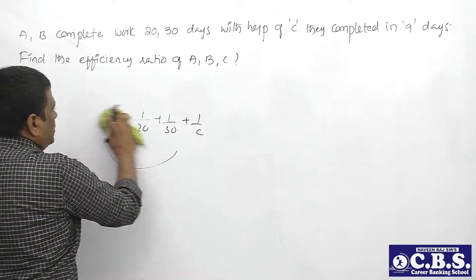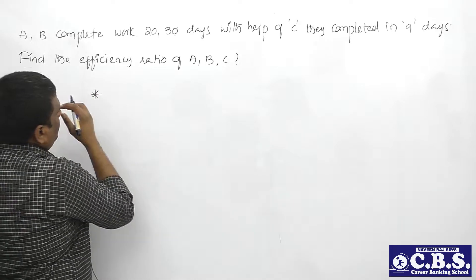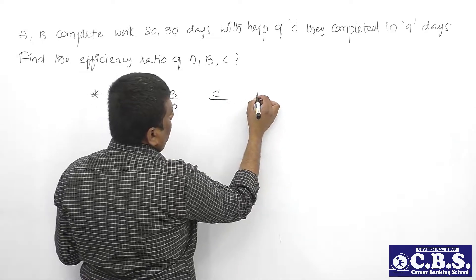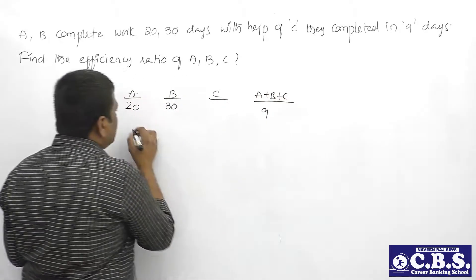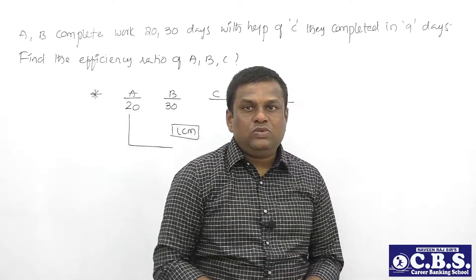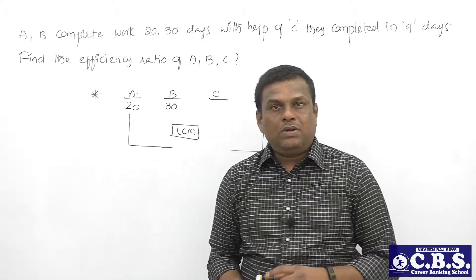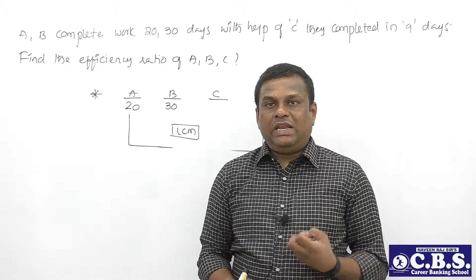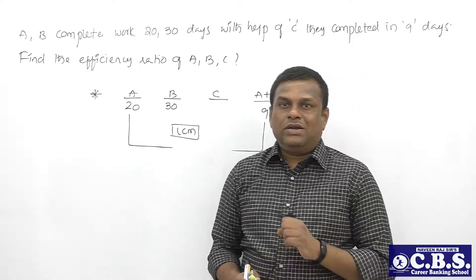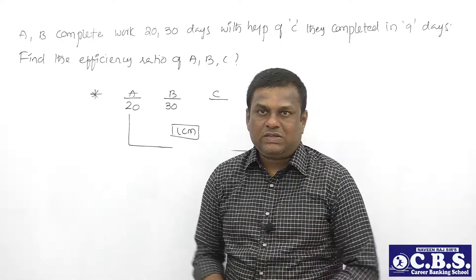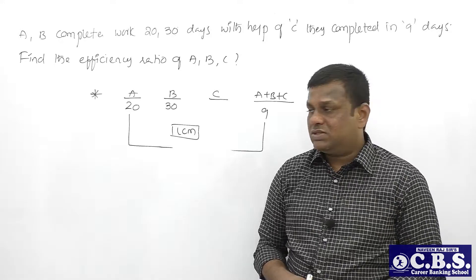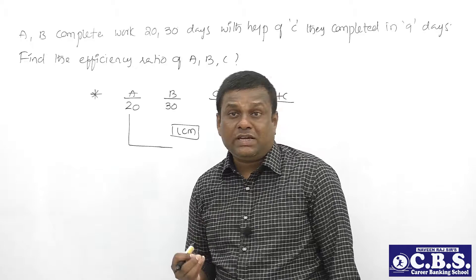So let's use the LCM concept instead. A takes 20 days, B takes 30 days, and A+B+C together complete the work in 9 days. We apply LCM because time is an increasing function. LCM stands for Least Common Multiple - 'multiple' indicates increasing. Just like age is an increasing function, days, hours, minutes, and seconds are all increasing - so we use LCM. The LCM of 20, 30, and 9 is 180.